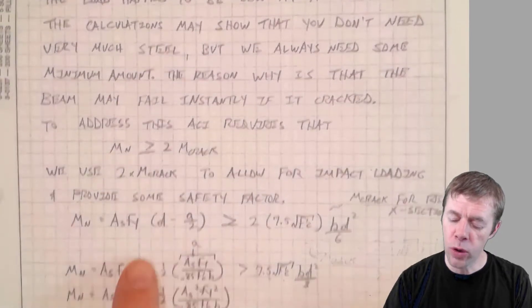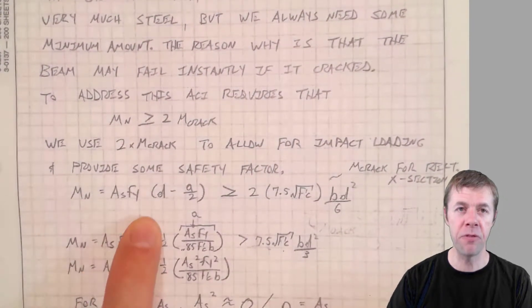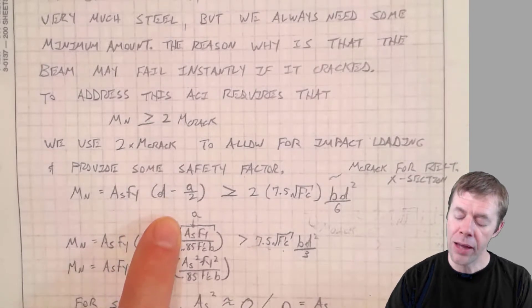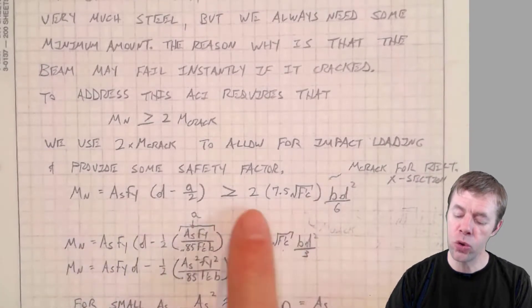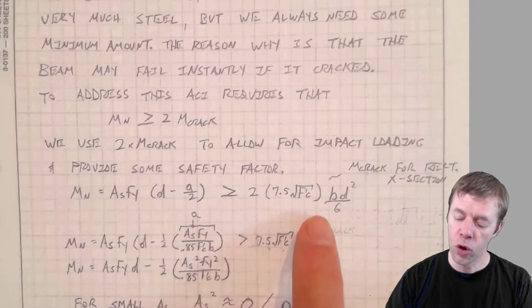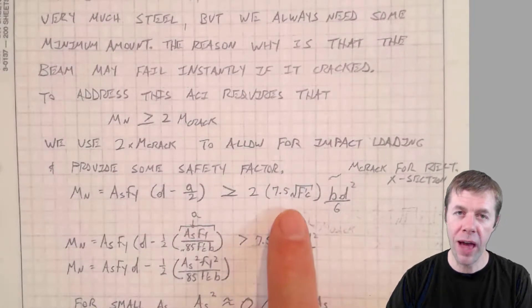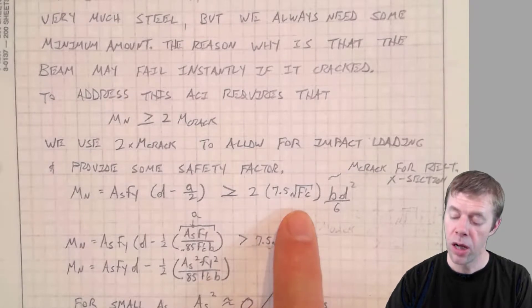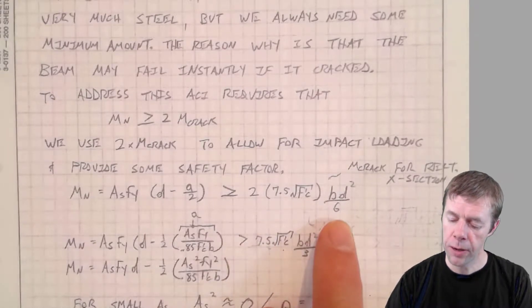And why do we use two? Well, you need some safety factor, but also we're worried about impact loading. Impact loading is pow, you hit something, smack, you drop something. You wouldn't want that to break your beam instantly. So we're going to take the capacity of a beam in flexure, ASFY times D minus A over two, and set it equal to two times the cracking moment. And one estimate of that is seven and a half times root F prime C, that's the modulus of rupture, times BD squared over six.